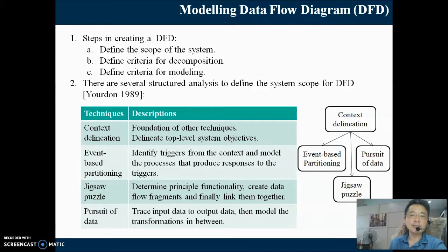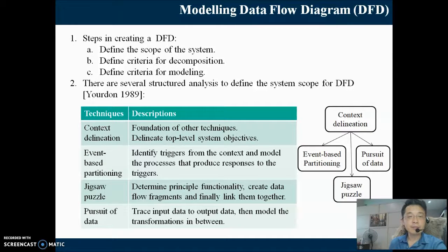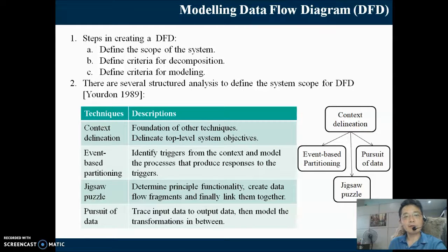Event-based partitioning is based on triggers from the context and models the processes that produce responses to the triggers. Jigsaw puzzle requires us to come up with fragments of data flow and then figure out how these fragments could be linked together. In pursuit of data, we trace input data to output data, and by tracing, we figure out the transformations in between the input and the output.